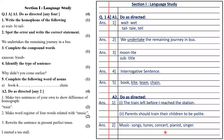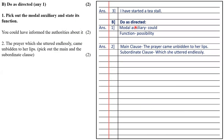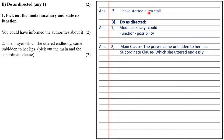Then the third question is rewrite the sentence in present perfect tense: I have started a tea stall. Question B is pick out the modal auxiliary and state its function.